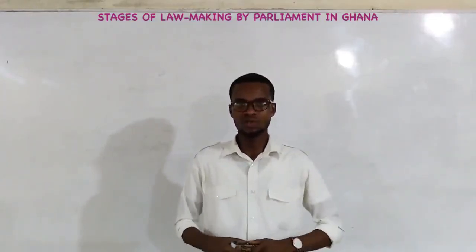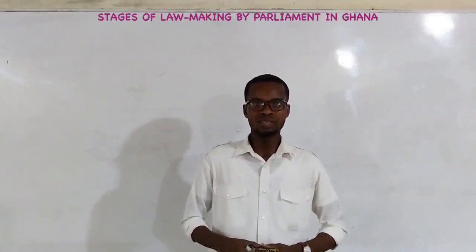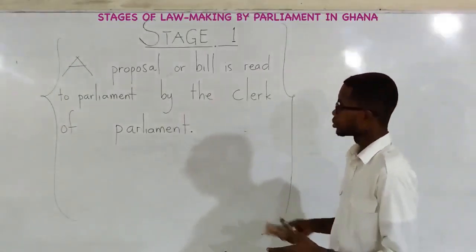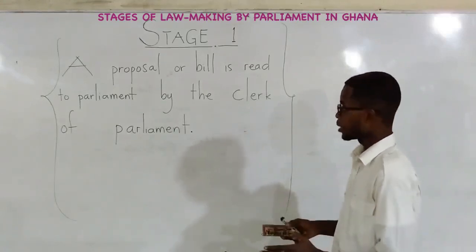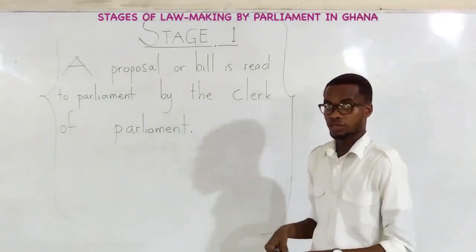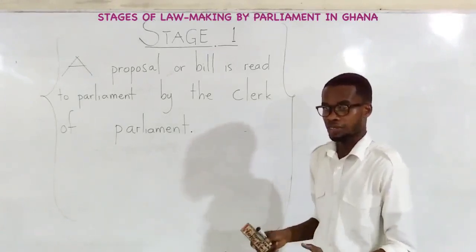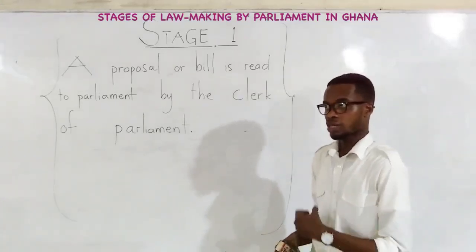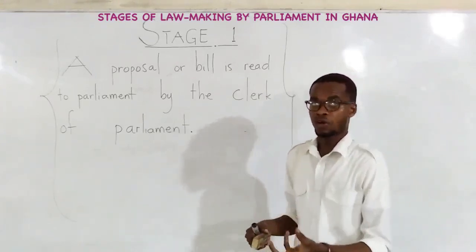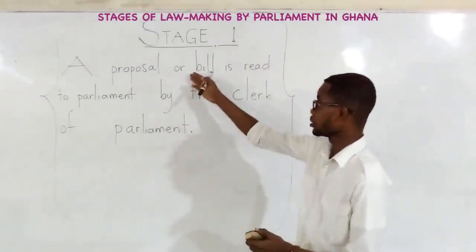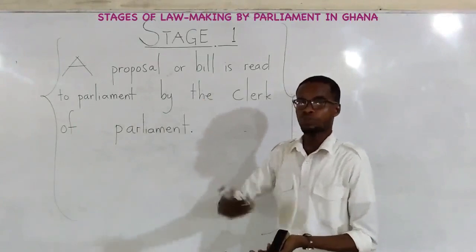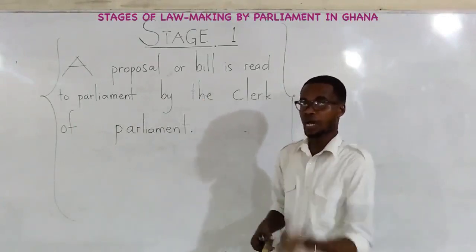We're going to look at ten stages of law-making. Under stage one, a proposal or a bill is read to parliament by the clerk of parliament. The clerk is one of the officials in the house of parliament where the laws are made. It is assumed that most or all the members of parliament have not yet had copies of the bill. A bill is the raw state of a law. The bill will now be processed — that's why you pass it through a vetting process before it becomes a law.